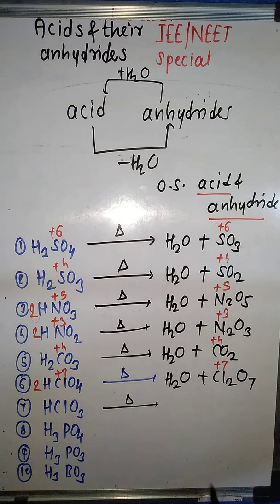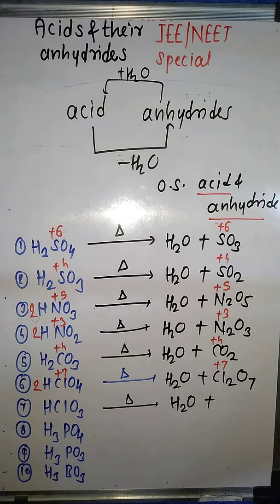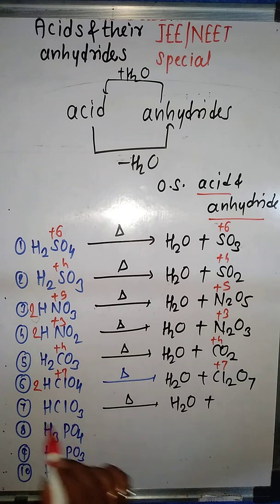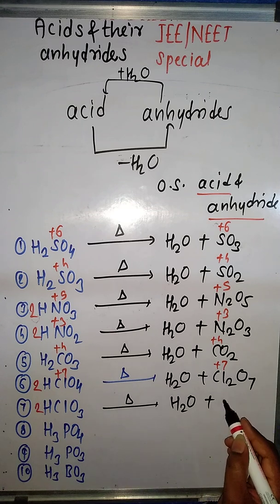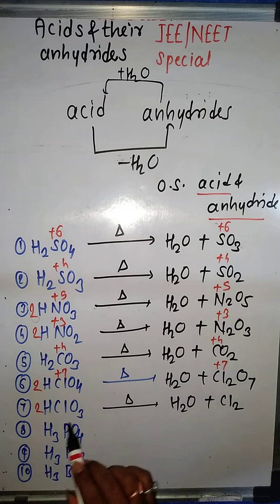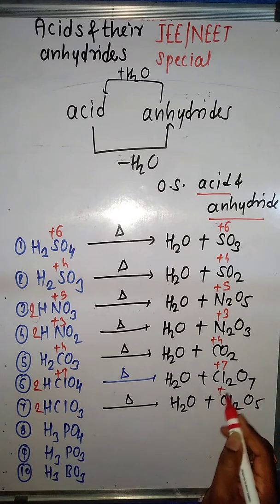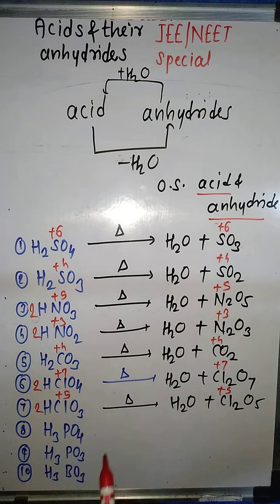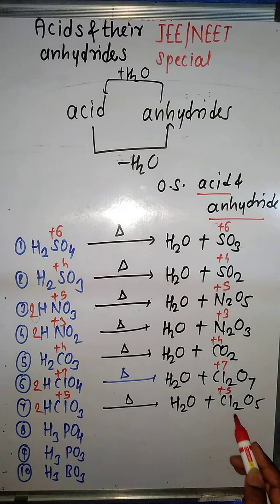Next example is HClO₃. Heating with a strong dehydrating agent: the expected product is H₂O. There is one hydrogen in HClO₃ and two in H₂O, so we multiply by two to balance hydrogens. What's left is two chlorines and five oxygens, giving Cl₂O₅. Chlorine's oxidation state in HClO₃ is +5, and in Cl₂O₅ it is also +5. So Cl₂O₅ is the anhydride of HClO₃.